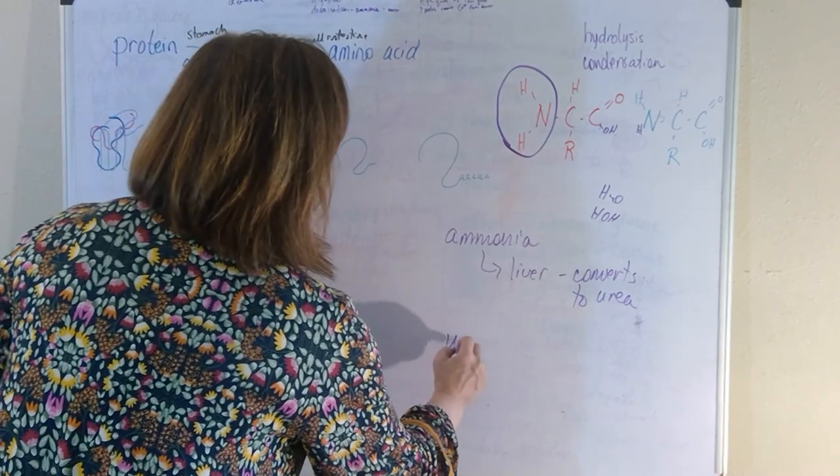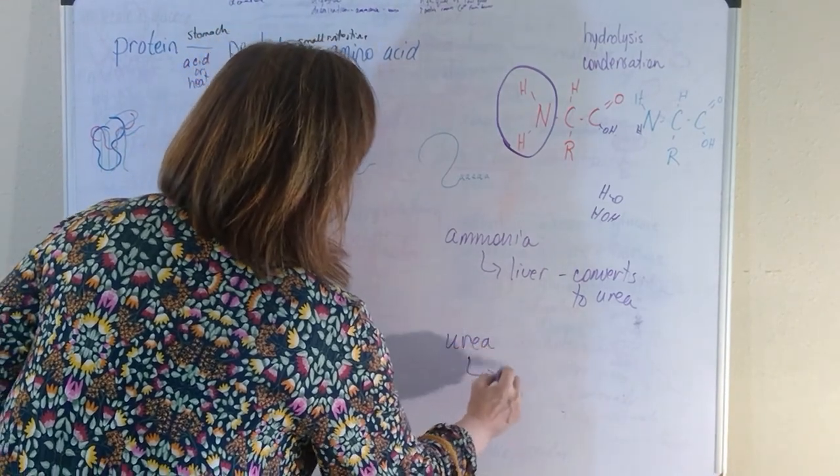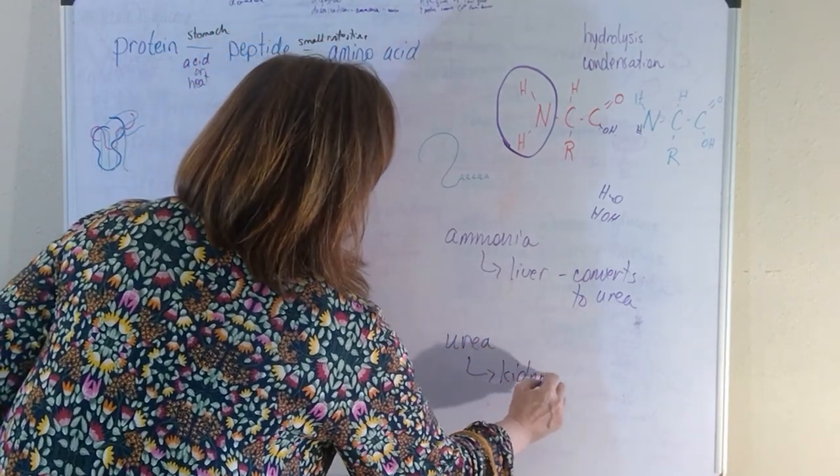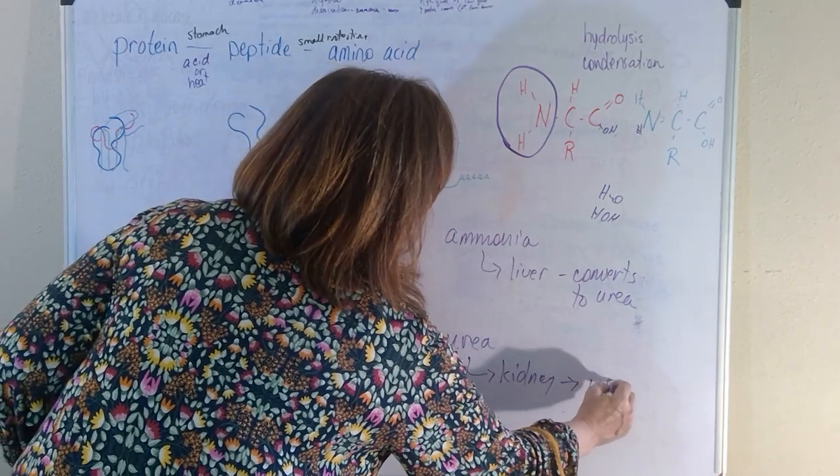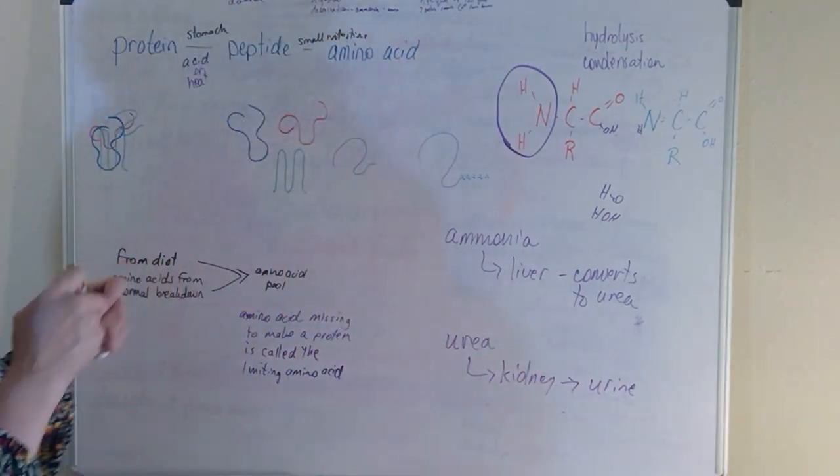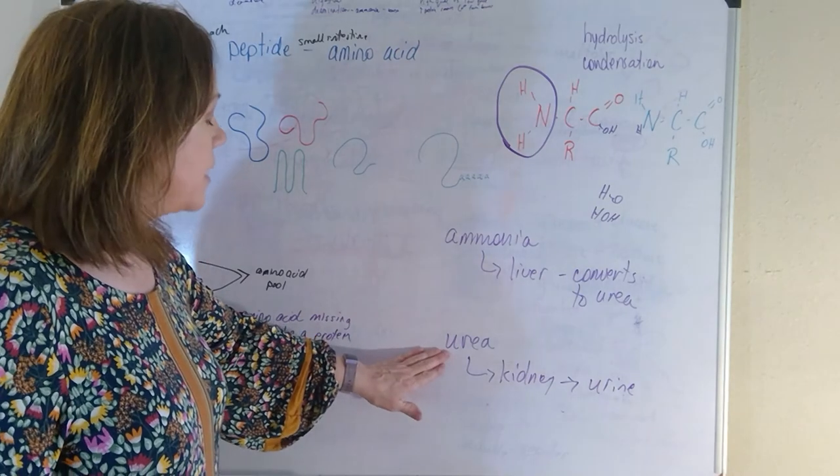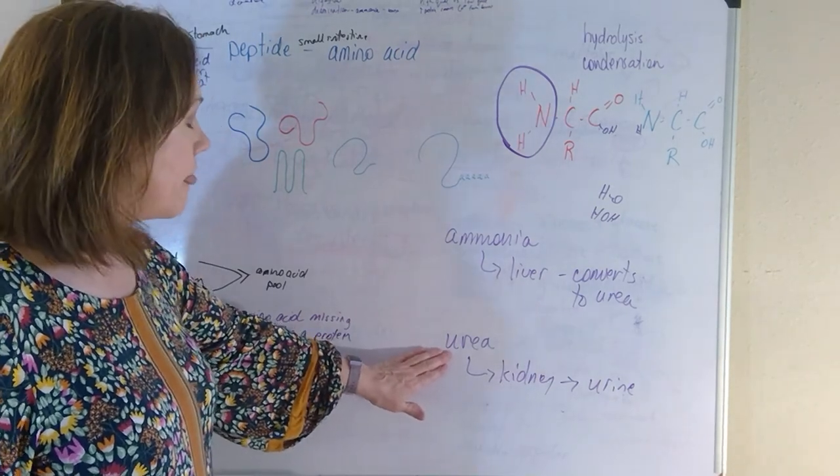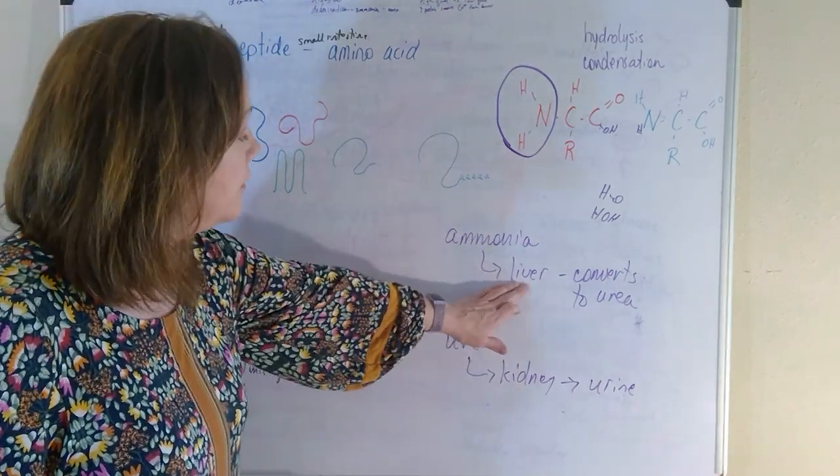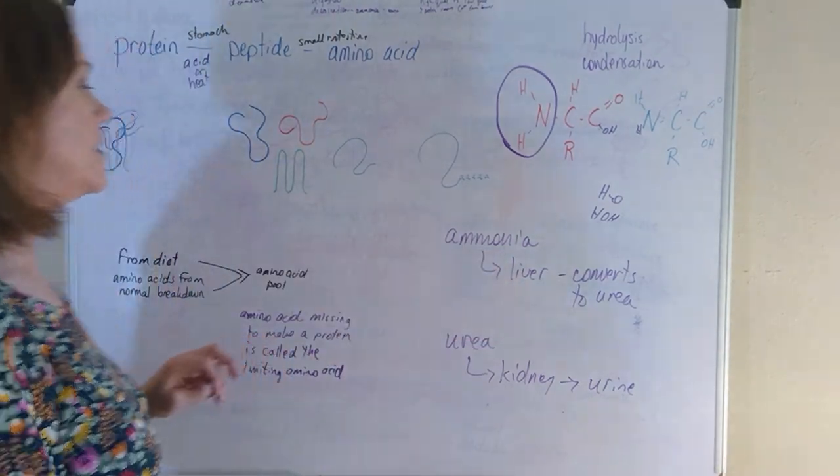So whenever the urea goes into the bloodstream, it goes to the kidneys. And the kidneys are going to filter it out and it leaves the body in urine. So if you have kidney failure, you're probably going to have an increased amount of urea in the blood. If you have liver failure, you're probably going to have an increased ammonia amounts.